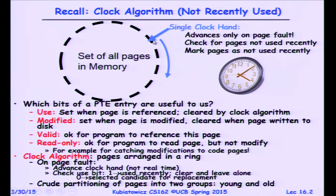The key thing about the clock algorithm is that it's crudely partitioning pages into two groups: young and old. The not-old pages are the ones that people are still using, and the old pages are ones that aren't getting used in the complete loop.